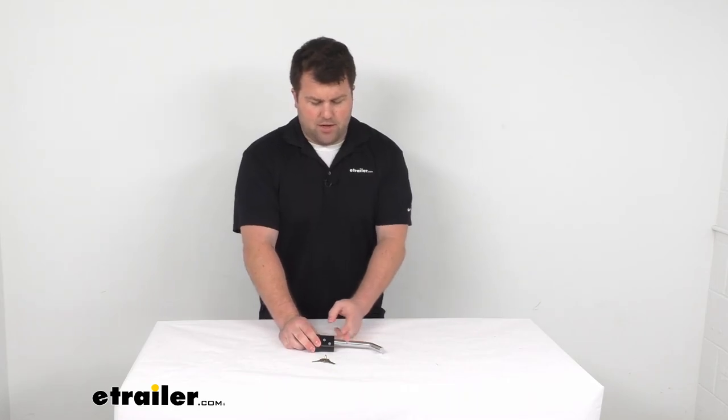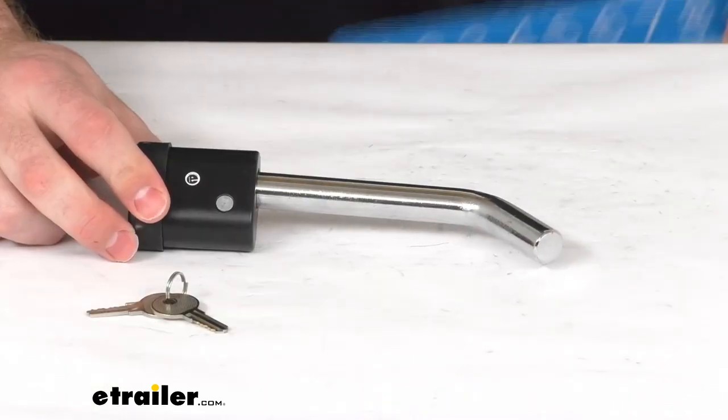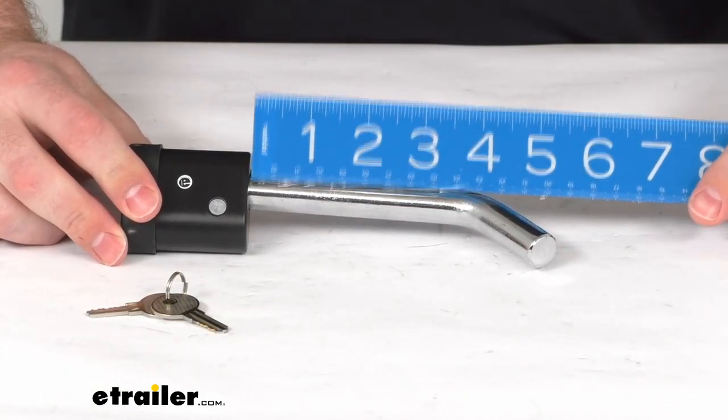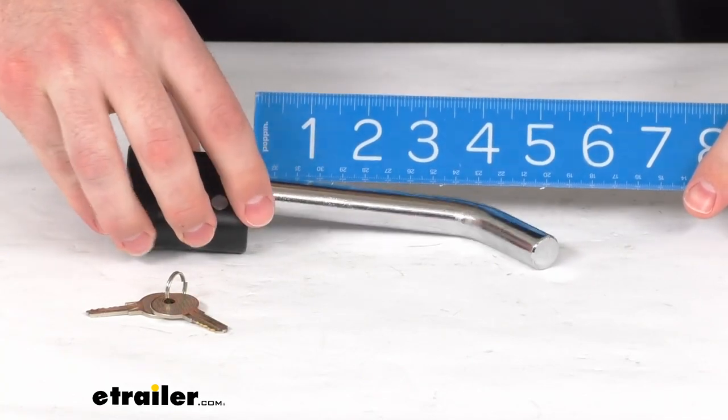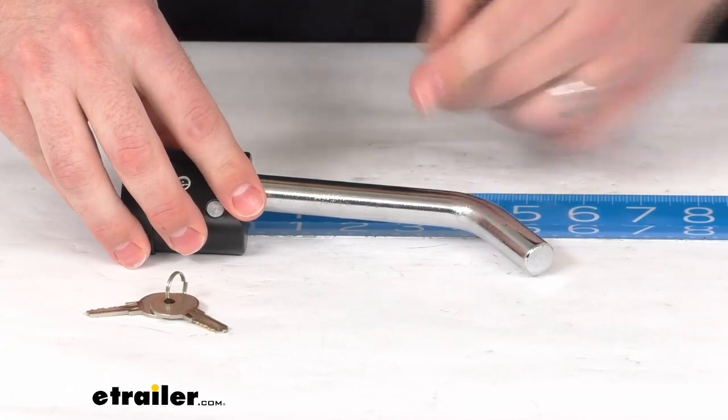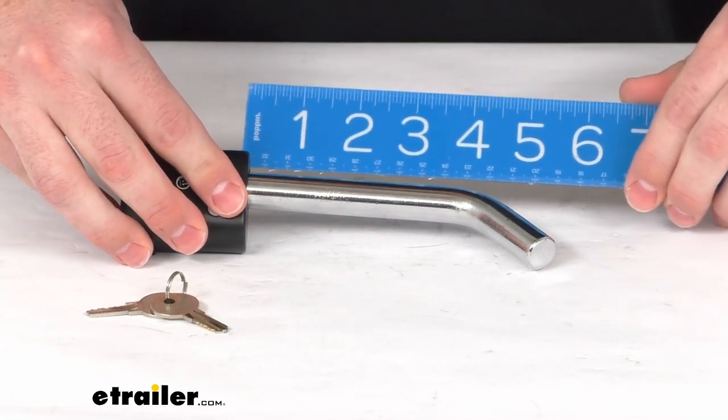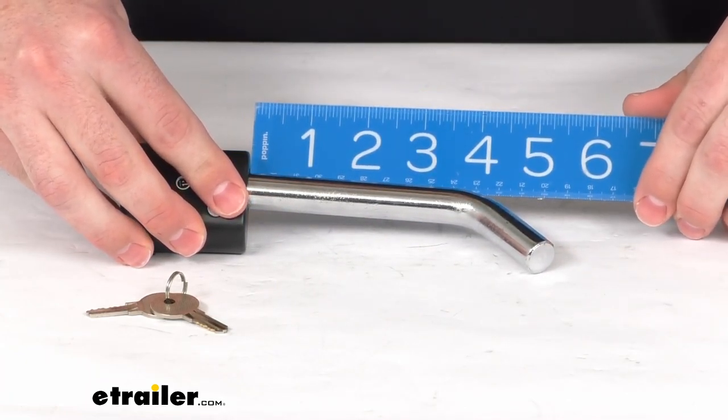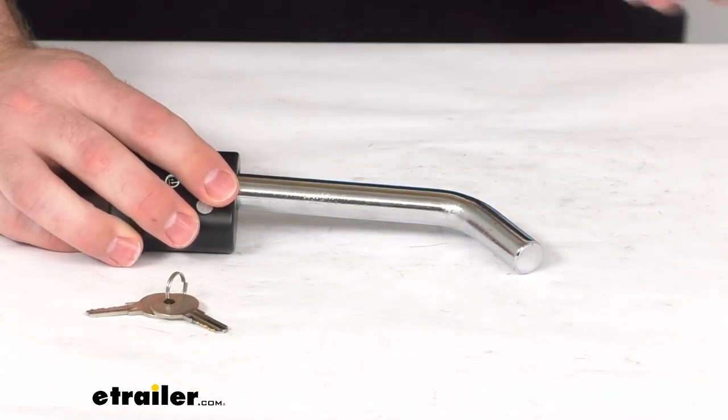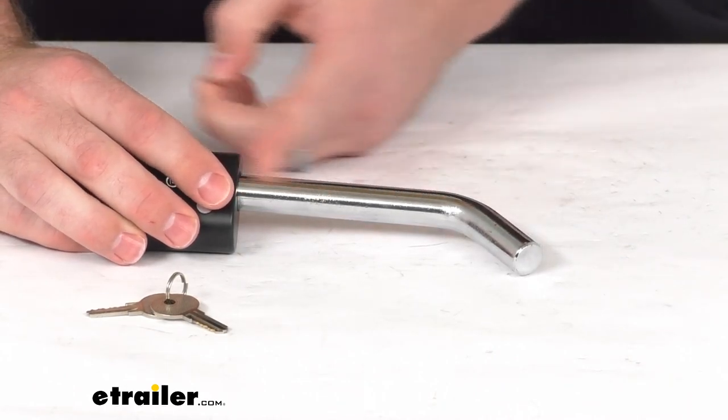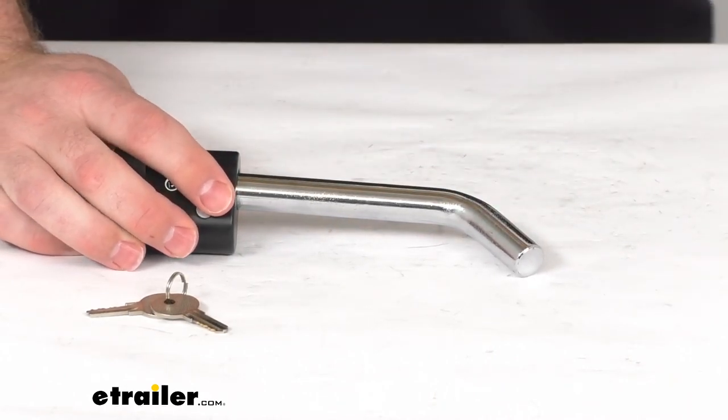Now our usable span here, I'll give you a little bit of insight. From where the lock ends to where we have our first bend, it's right about - I'm going to call it three and three-quarters of an inch, might be safer saying three and a half inches - so like I said, your 2 inch by 2 inch hitch is going to work just fine.